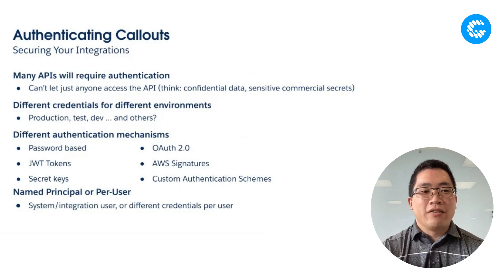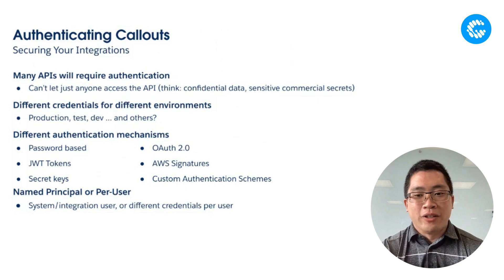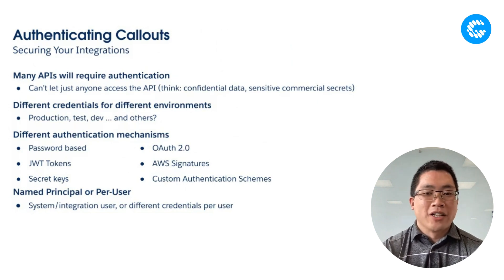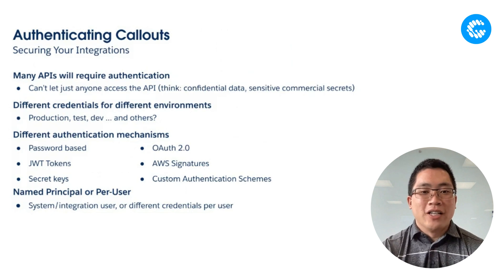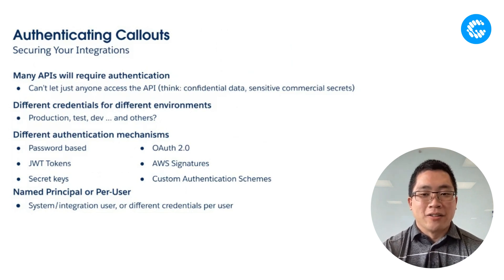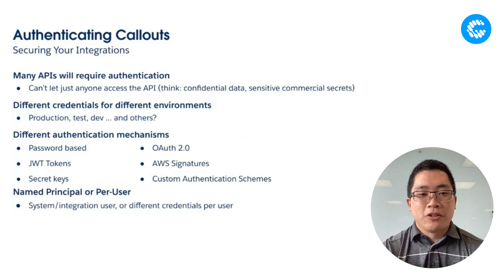That was a really simplistic example, and I think many people would agree it's not realistic in most companies' organizations. Most APIs will require you to authenticate — you can't just have APIs open to the world to allow anybody to access your company's secrets, PII, and other things. You may also have different credentials for your different environments between production, development, testing, QA, and staging.